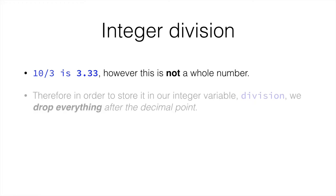So, in order to store our value in our integer variable, called division, we need to drop everything after the decimal point. 10 divided by 3 is just the value of 3.